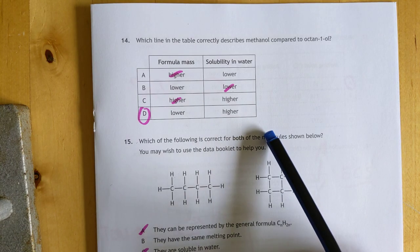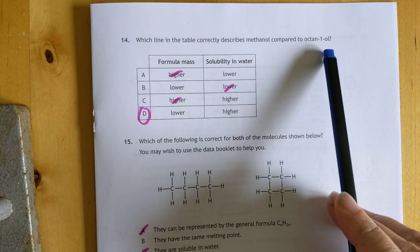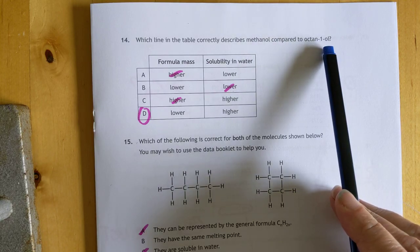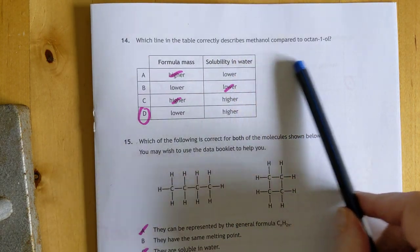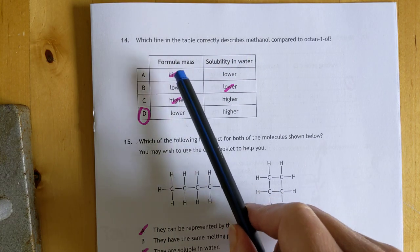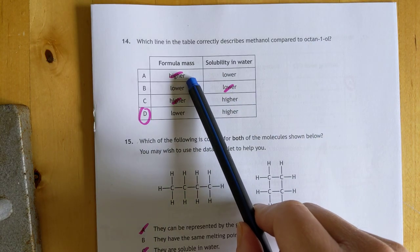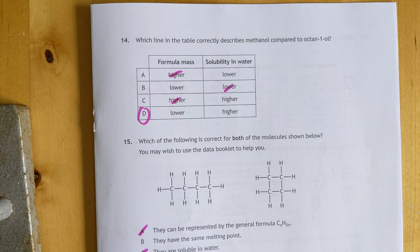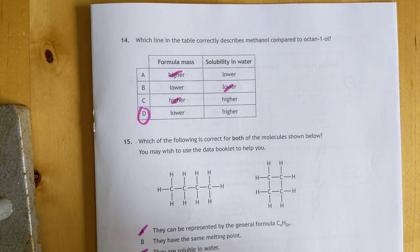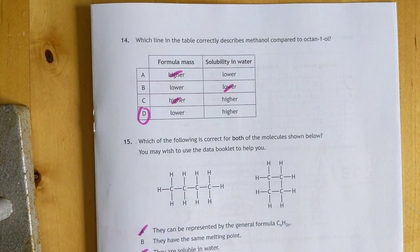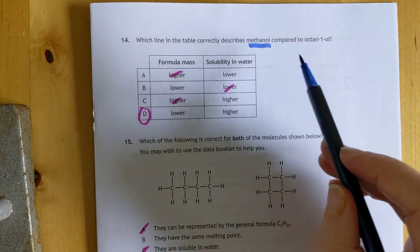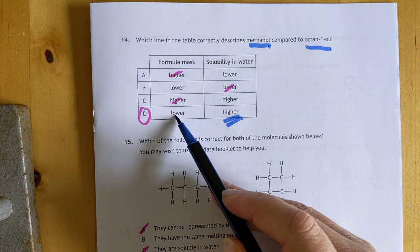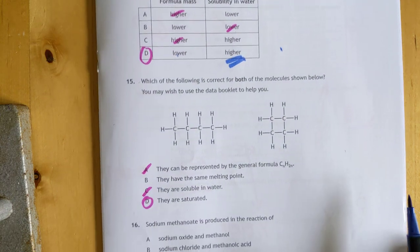Which line in the table correctly describes methanol compared to octan-1-ol? The smallest alcohol versus a big boy in the alcohol family. This is tricky. The first one has to be methanol compared to octan-2-ol. Methanol does not have a higher formula mass, so these two are out. The wording's confusing me. Methanol does indeed have a higher solubility in water compared to octanol, and methanol has a lower formula mass compared to octanol. Nearly tripped over my own questioning there.